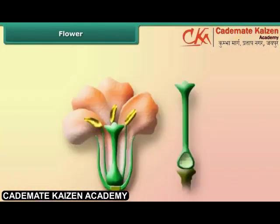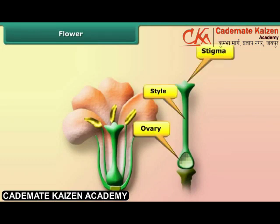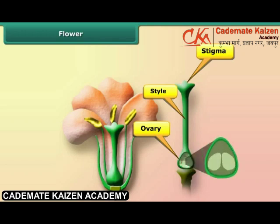The pistil is the innermost part of the flower and has three parts: stigma, style, and ovary. The stigma is the sticky surface at the top of the pistil — it traps and holds the pollen. The style is a tube-like structure that holds up the stigma. The style leads down to the ovary that contains the ovules.